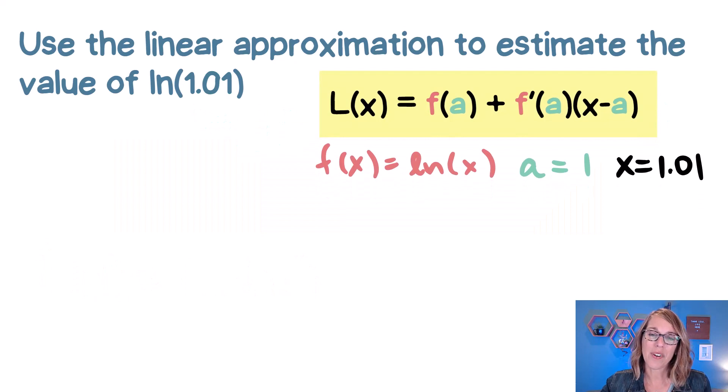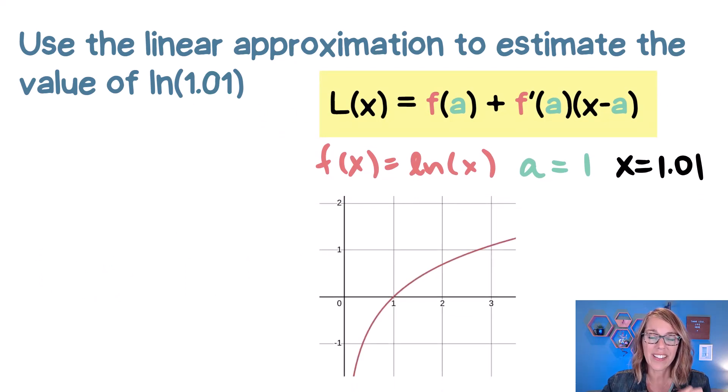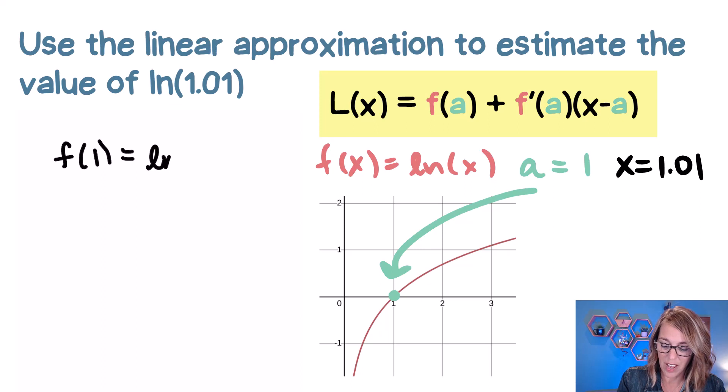We've got all the important pieces here. If we look at the graph, we are looking for the equation of this tangent line at 1. That's all the linearization is. Let's go ahead and start our work here. We do need F of A. So F of A, that's going to be F of 1. That's equal to the natural log of 1, which is equal to 0.